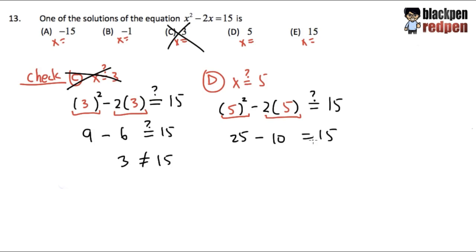And as we can see, it is correct. 25 minus 10 is definitely 15. And that's a true equation. And what this means is that the answer to this question is choice D.